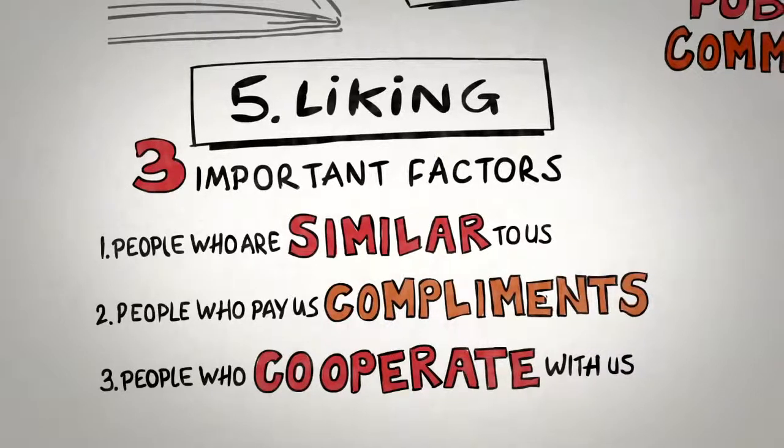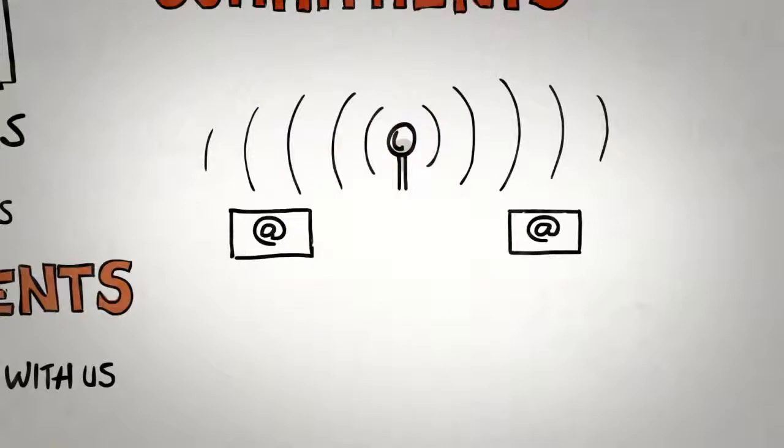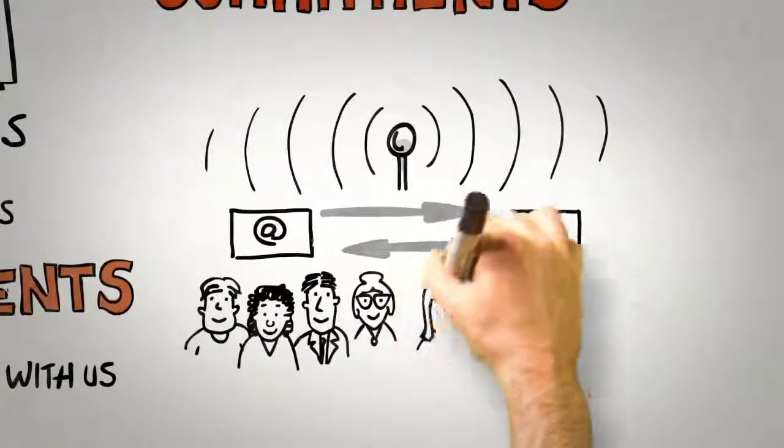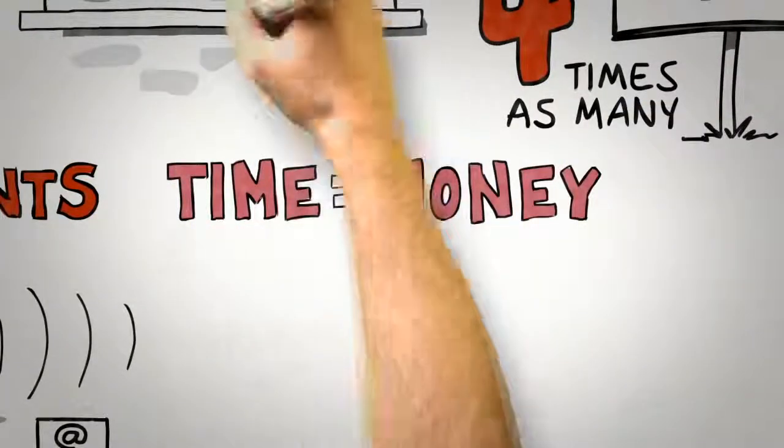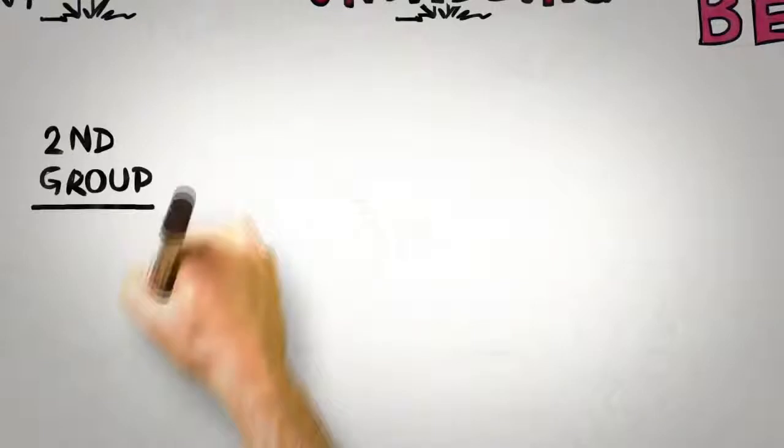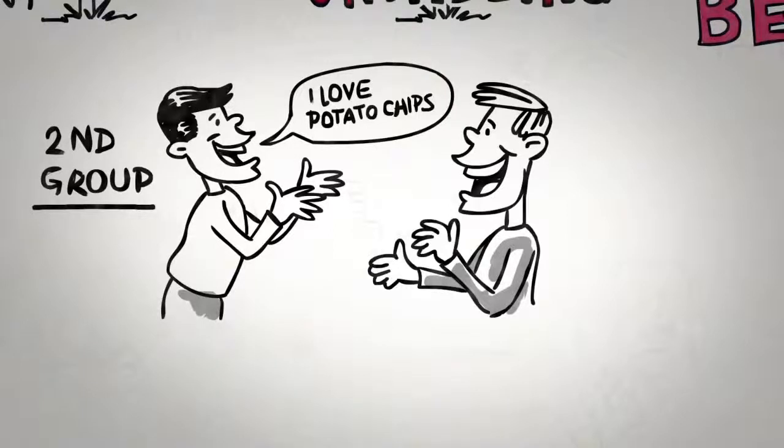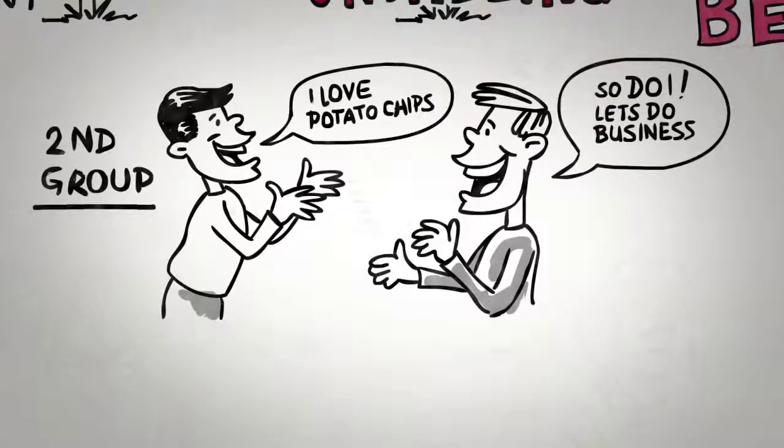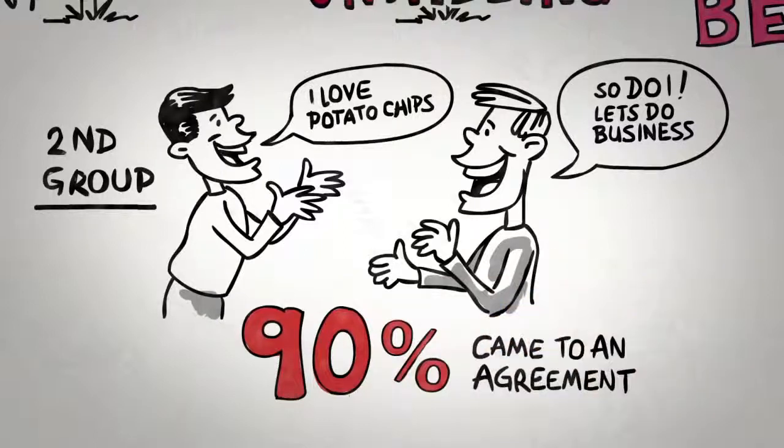As more and more of the interactions that we are having take place online, it might be worth asking whether these factors can be employed effectively in, let's say, online negotiations. In a series of negotiation studies carried out between MBA students at two well-known business schools, some groups were told, time is money, get straight down to business. In this group, around 55% were able to come to an agreement. A second group, however, were told, before you begin negotiating, exchange some personal information with each other, identify a similarity you share in common, then begin negotiating. In this group, 90% of them were able to come to successful and agreeable outcomes that were typically worth 18% more to both parties.